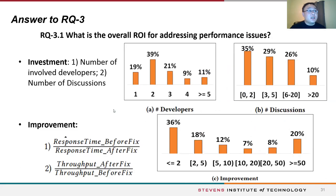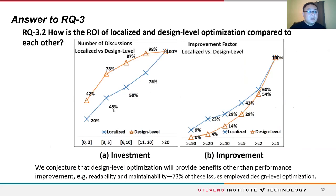We investigated the return on investment for fixing performance issues. Overall, the majority of performance issues are addressed by one or two developers with fewer than five discussions, and most have less than 10 times performance improvement. Comparing localized and design-level optimizations, we found that design-level optimization is more difficult to implement and has slightly lower performance improvement compared to localized ones. We conjecture that design-level optimization reflects quality trade-offs between performance and other quality attributes, such as reliability and maintainability.